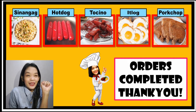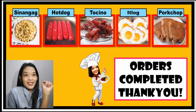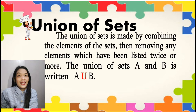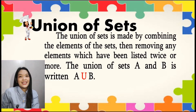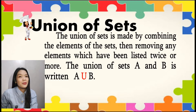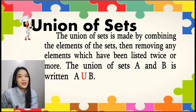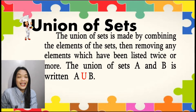Since orders are completed, let us now relate it to our lesson in math, which is about union of sets. The union of sets is made by combining the elements of the sets, then removing any elements which have been listed twice or more. The union of sets A and B is written as A union B, and the symbol for that is the U, which means the union.